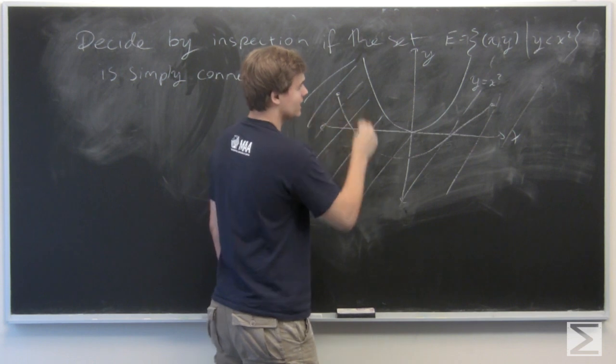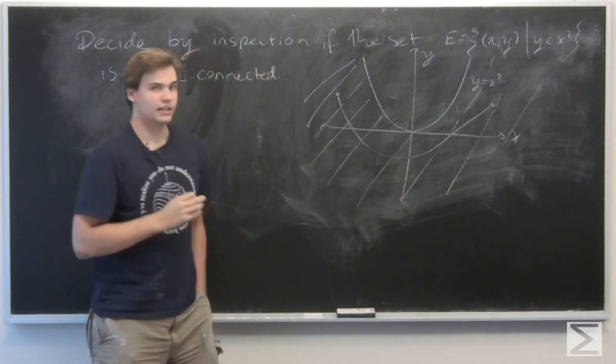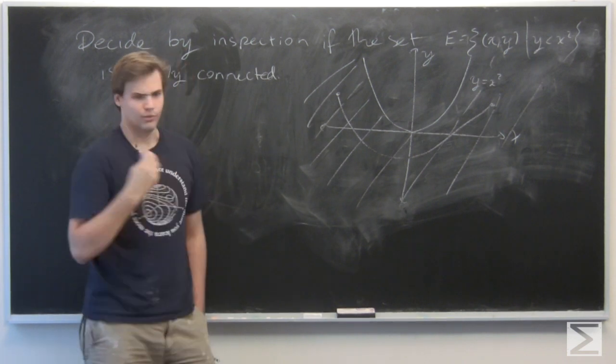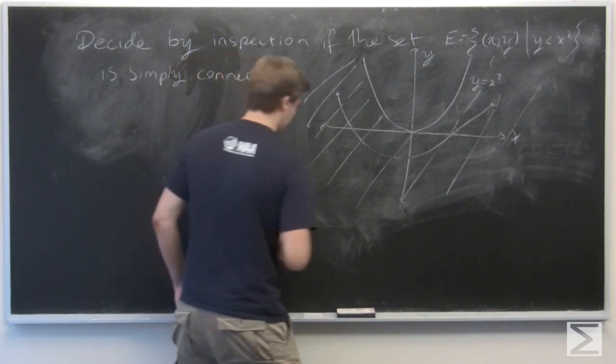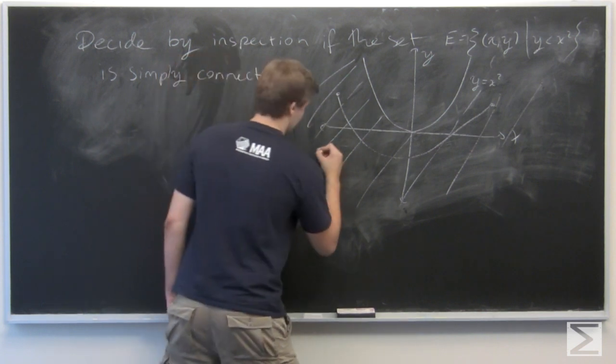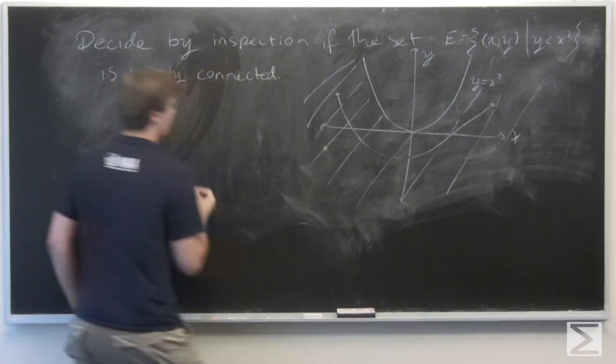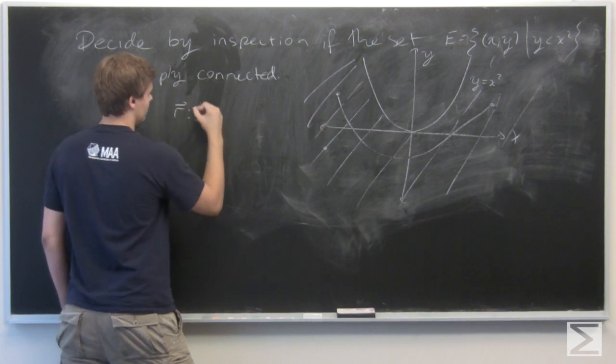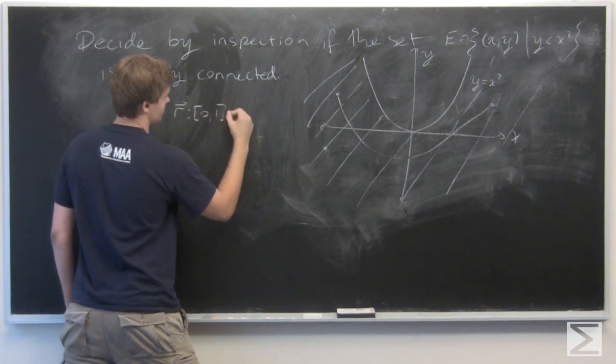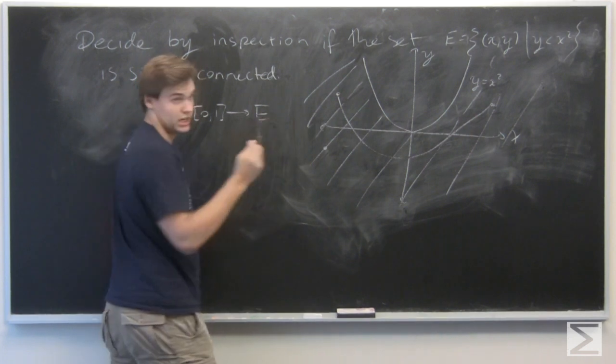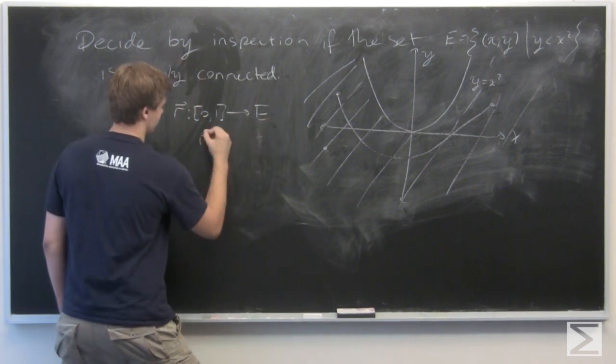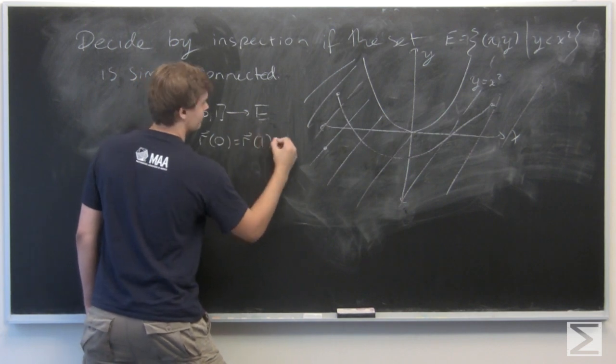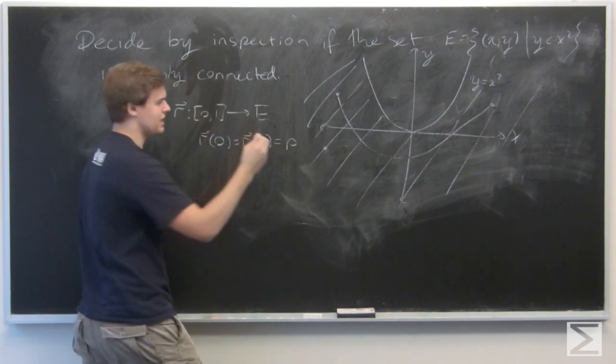So now the second criteria is that given any loop in the space with some base point. So a way of saying that is, we have some space, or sorry, continuous function R from the unit interval [0, 1] to E, continuous, with R(0) equals R(1) equals P for some P in E.